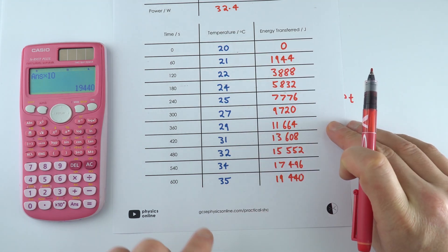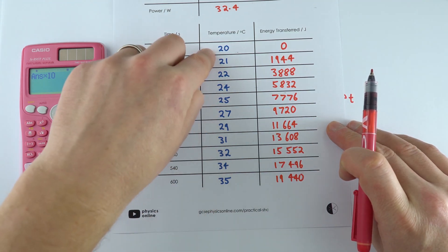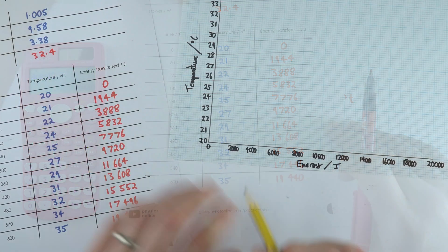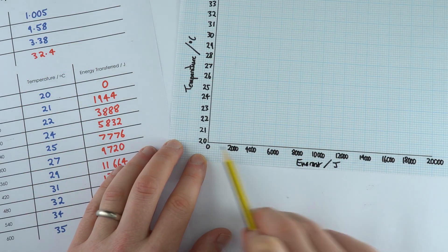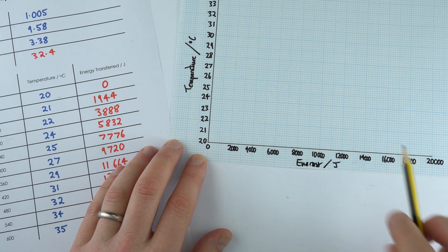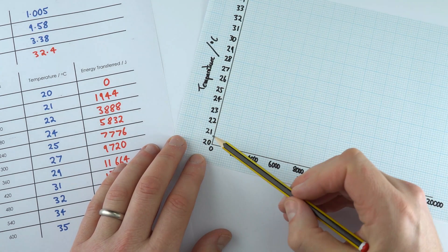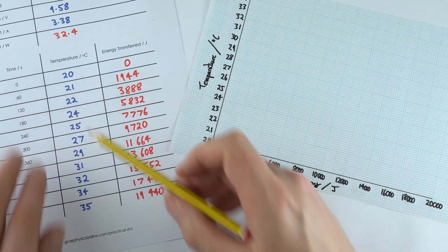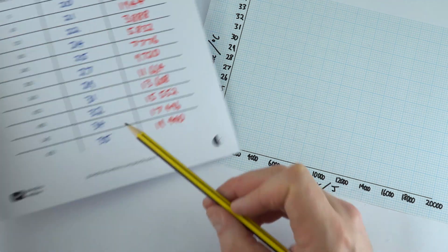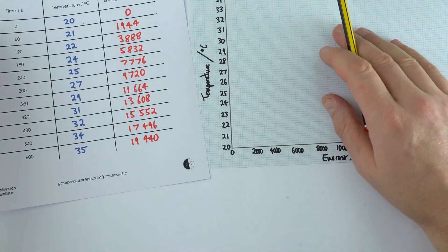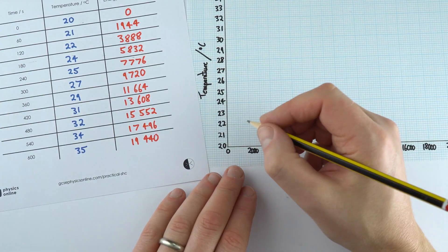We're going to put that on the x-axis, and we're going to have the temperature on the y-axis. So on my axis, I've got the energy going from 0 up to 20,000 joules, and I've got my temperature going up from 20 degrees, where we started at, up to the final temperature of 35 degrees over here. So I can now start plotting my data.